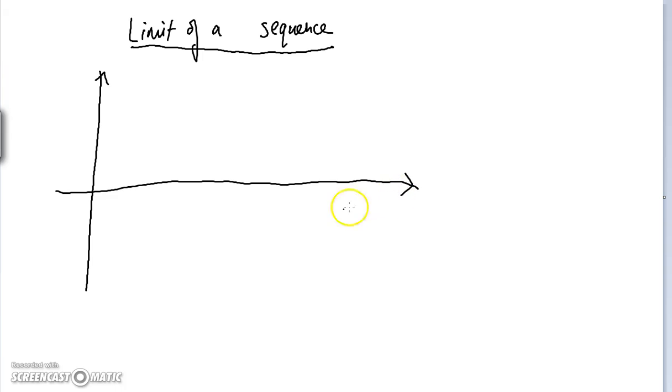So imagine the x-axis here is n, which stands for a line which contains all the natural numbers. So there's 1, 2, 3, 4, and so on. And the vertical axis, the y-axis,